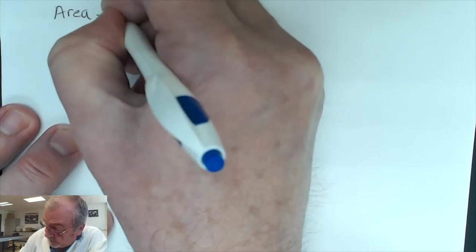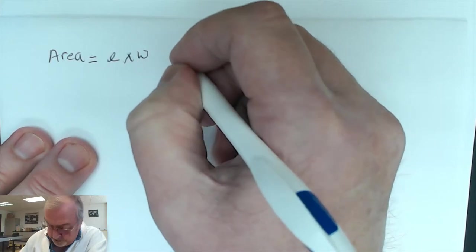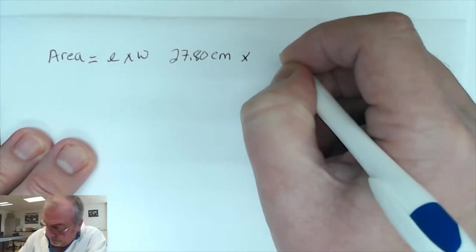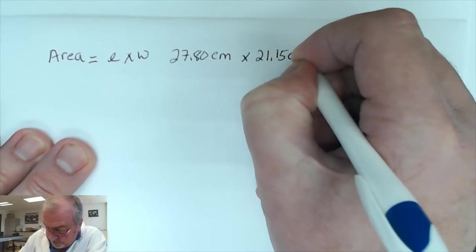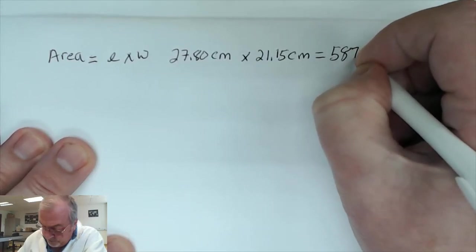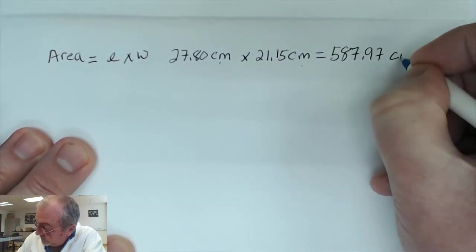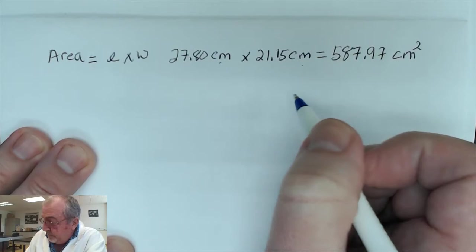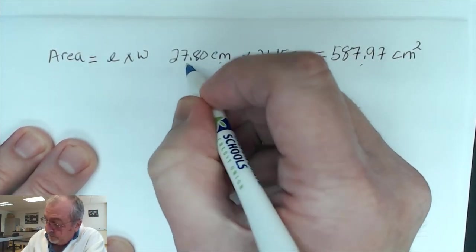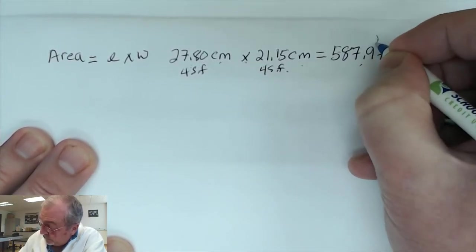Area is length times width. My length was 27.80 centimeters and the width was 21.15 centimeters. Plugging that into the calculator gives 587.97, and because it's centimeters times centimeters the unit is centimeters squared. For significant figures in multiplication, the answer can only have the same number of digits as the factor with the fewest — both have four sig figs, so we need to round after the fourth digit.